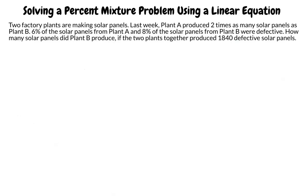Two factory plants are making solar panels. Last week, plant A produced two times as many solar panels as plant B. Six percent of the solar panels from plant A and eight percent of the solar panels from plant B were defective. How many solar panels did plant B produce if the two plants together produced 1840 defective solar panels?